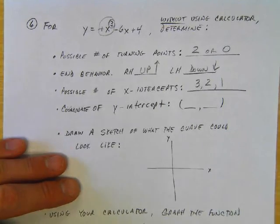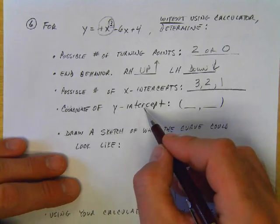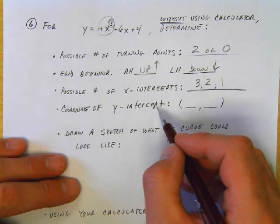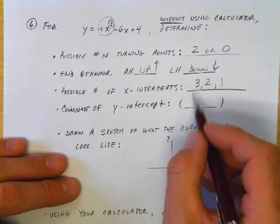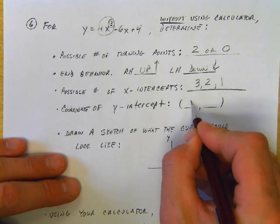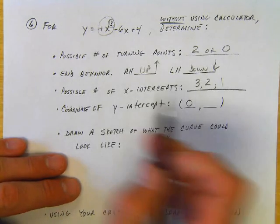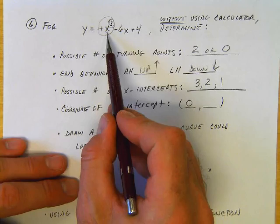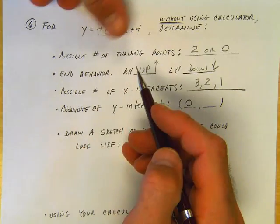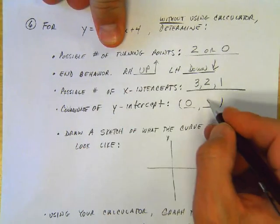The next question: coordinate of the y-intercept. When you're on the y-axis, the x-value is 0. If you plug in 0 wherever there's an x in the equation, the y-value is 4. So that's the y-intercept.